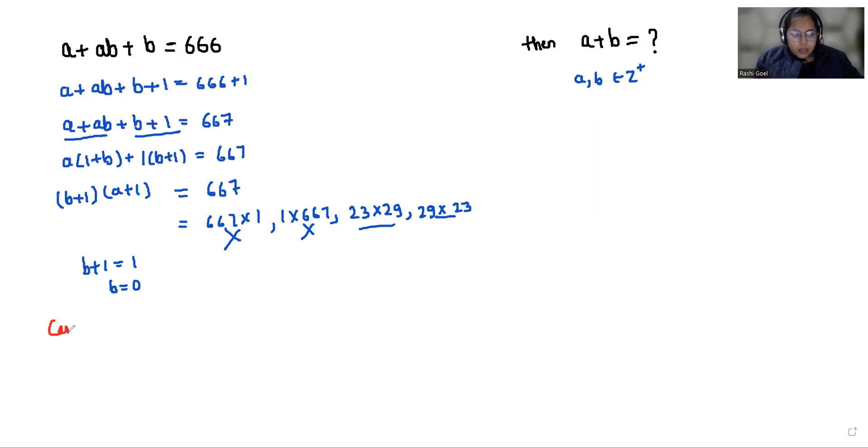Case 1: When A plus 1 equals 23, the value of A is 22, and B plus 1 equals 29, so the value of B is 28.